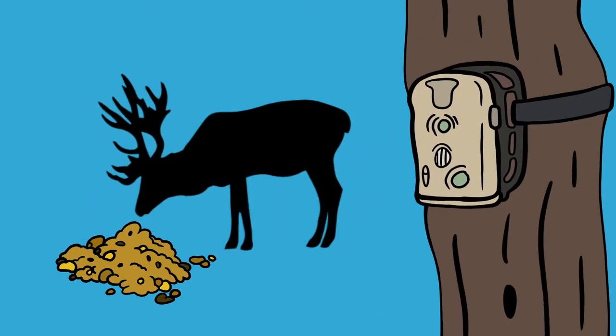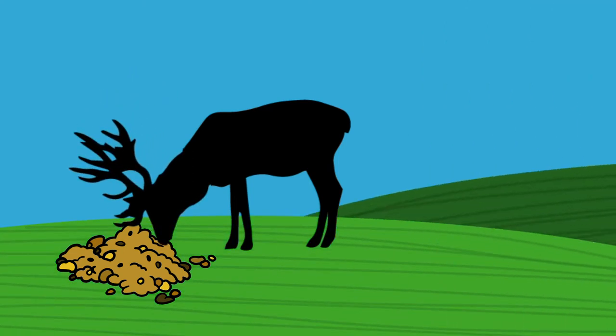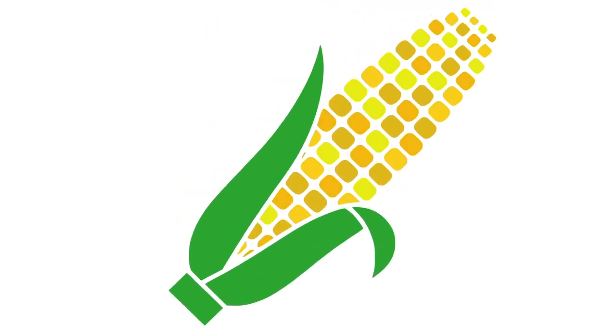Use it as bait in front of your trio camera to scout that perfect buck. Make it a food plot topper to enhance your plot's desirability and usage. Or get crazy and mix it with corn for a powerful punch.